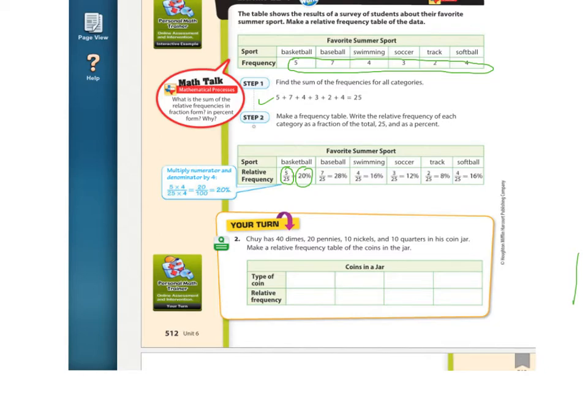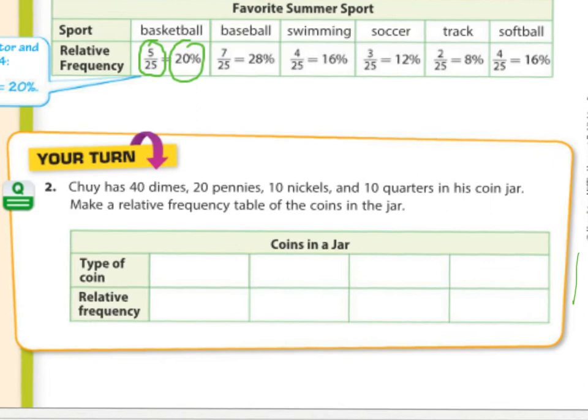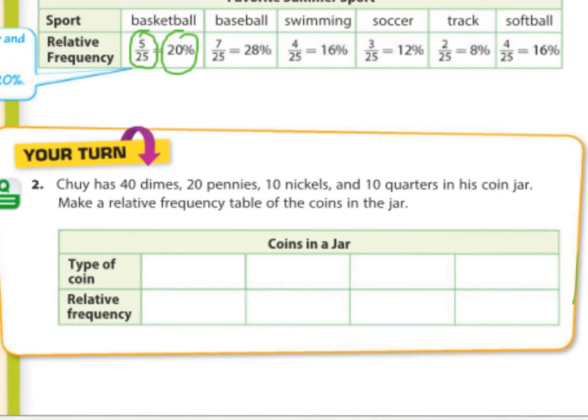Let's do this one, number two. Chuy has 40 dimes, 20 pennies, 10 nickels, and 10 quarters in his coin jar. Make a relative frequency table of the coins in the jar. So the type of coin, let's go ahead and copy down this table. Let's list the type of coins. I'm just going to put it in the same order that they have it. So there's my types of coins.